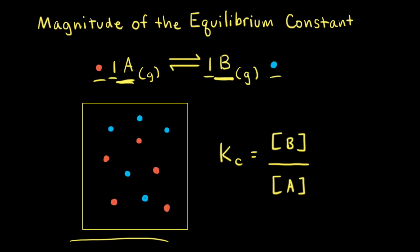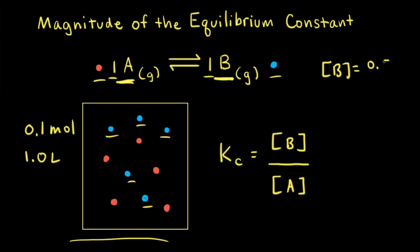If we assume that each particle in our particulate diagram represents 0.1 moles of a substance, and the volume is 1 liter, we can calculate the concentration of both A and B. For B, there are 5 blue spheres, so that's 5 times 0.1 moles, or 0.5 moles. The concentration of B is 0.5 moles divided by 1 liter, giving 0.5 molar.